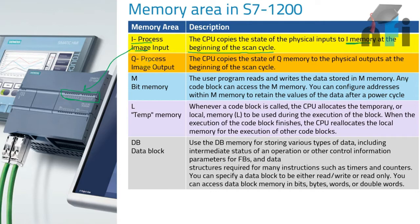Then you have process image output — this is for the outputs. It will store the value of the outputs in another memory. The CPU copies the status from that memory to the physical output at the beginning of the scan cycle, so whatever value you have in the process image, it will be copied to the output.